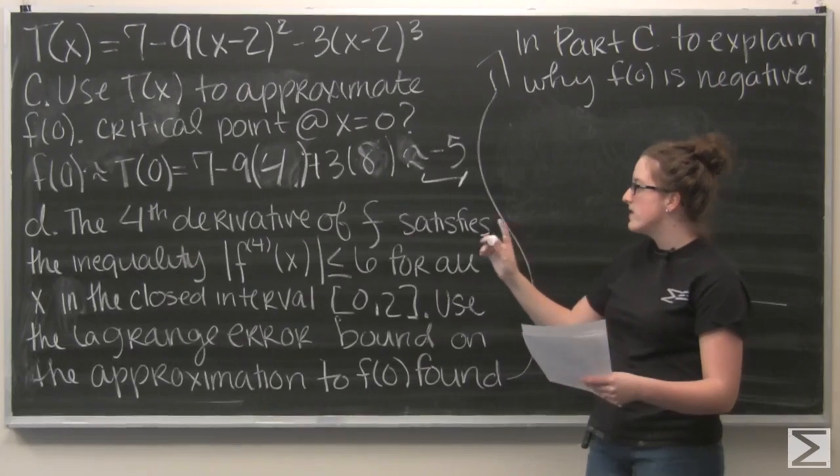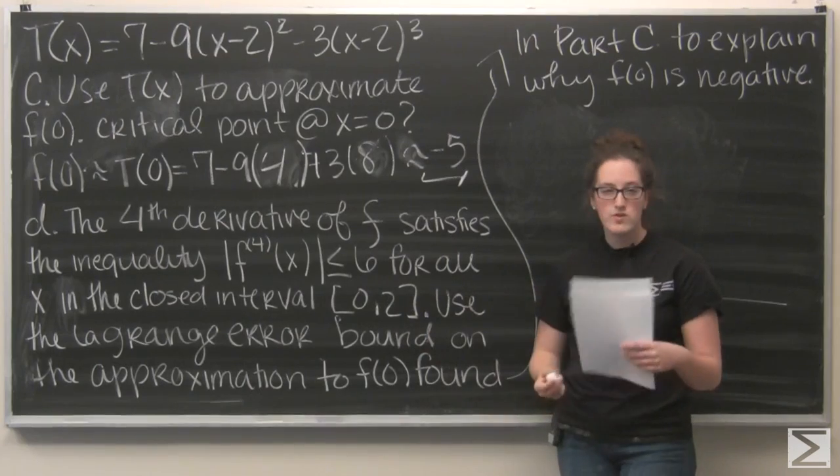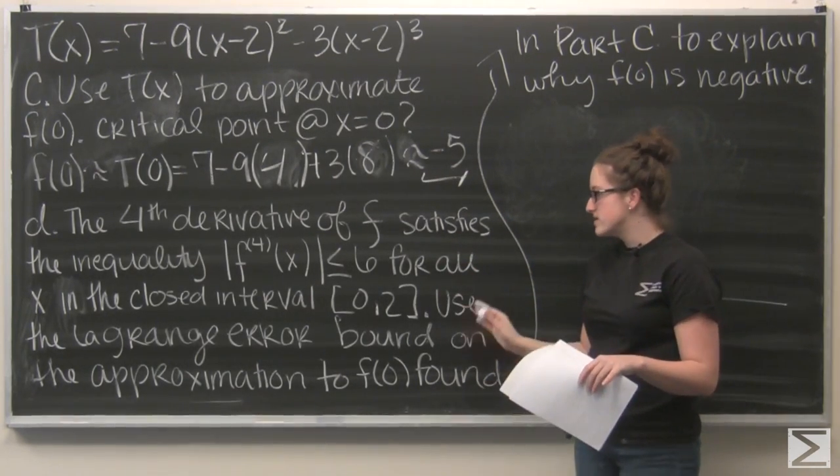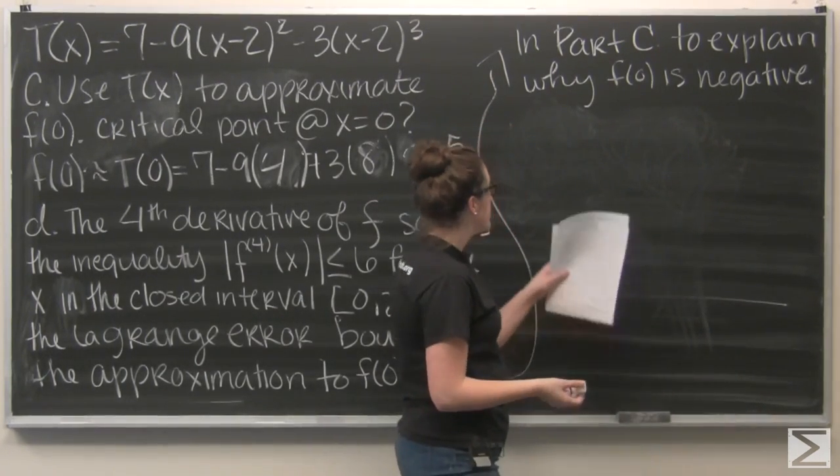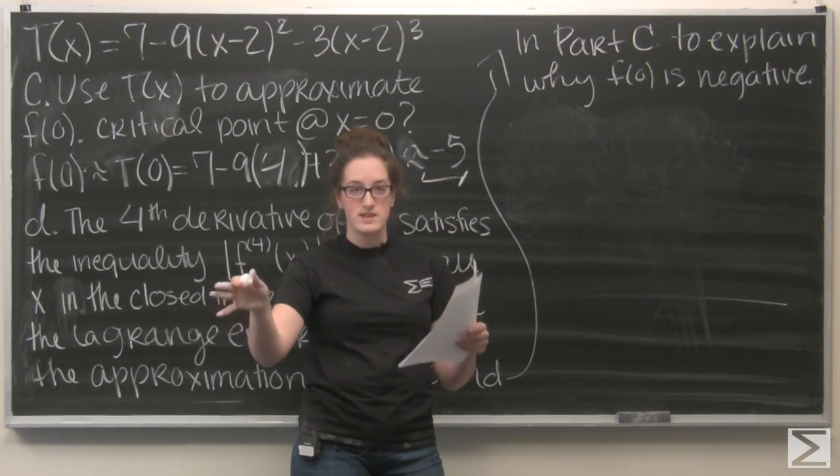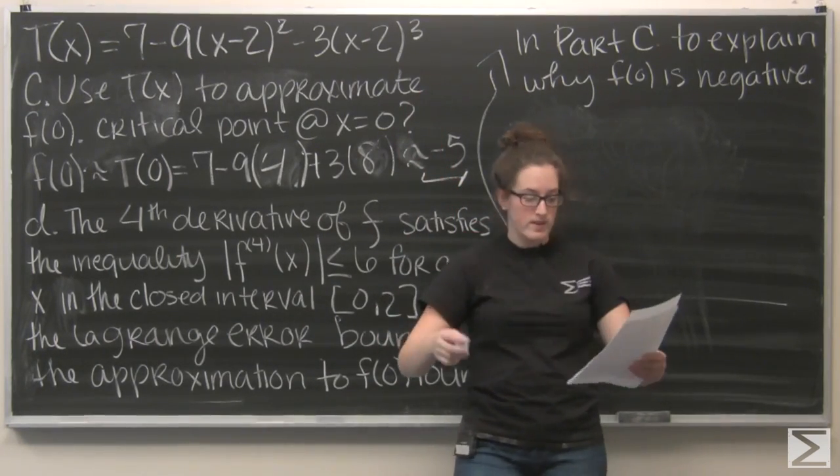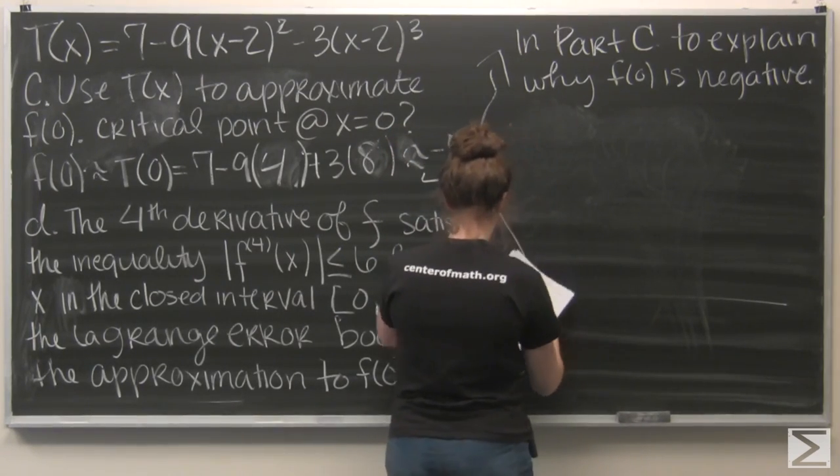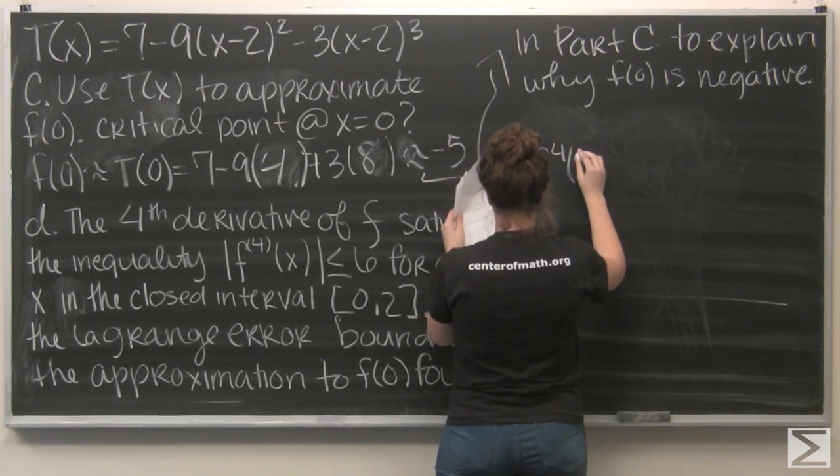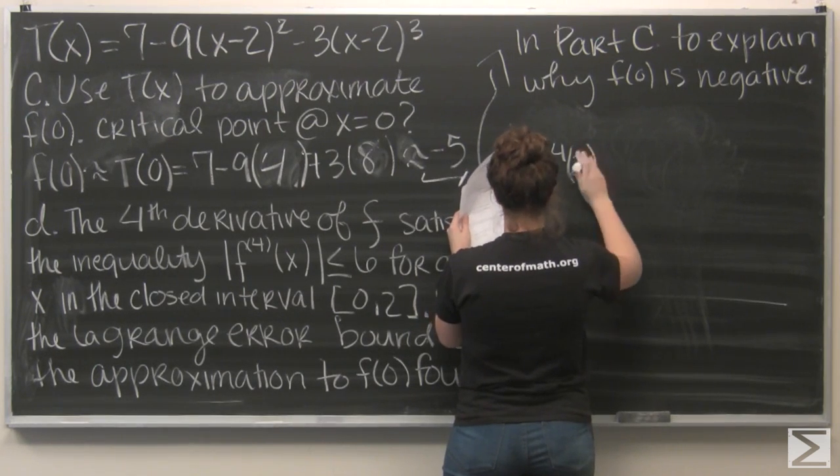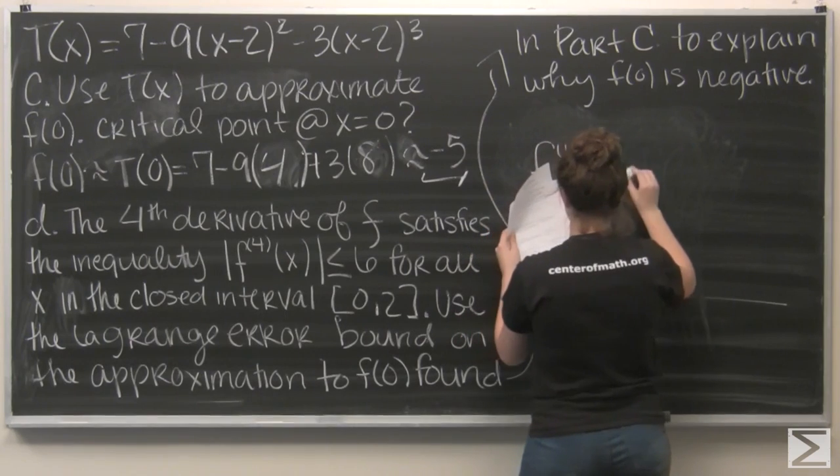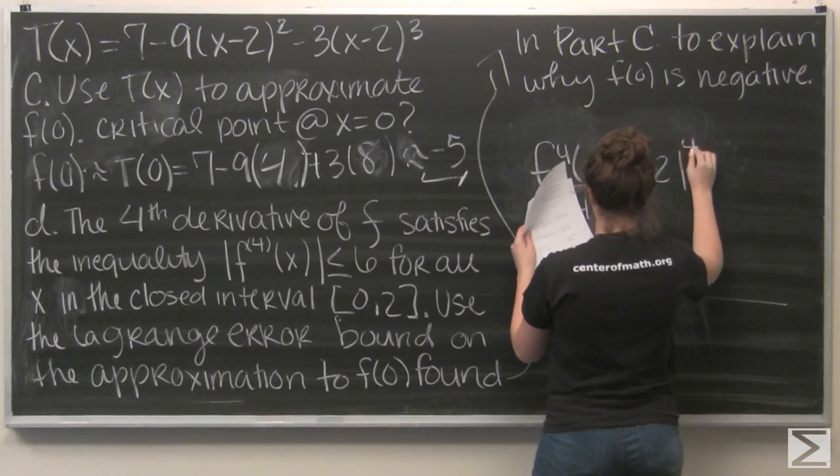Okay. So, now let's look at part d. And it's a lot of words. But here they are. So, the fourth derivative of f satisfies the inequality given. So, the fourth derivative of f, absolute value, is less than or equal to six. So, for all x, oh, for all x in the closed interval zero to two, use Lagrange error bound on the approximation to f of zero, found in part c, to explain why f of zero is negative. Okay. So, we remember that the Lagrange error bound method is just looking at the next term in the Taylor polynomial. So, here I'm given a third order. So, I want to look for fourth.